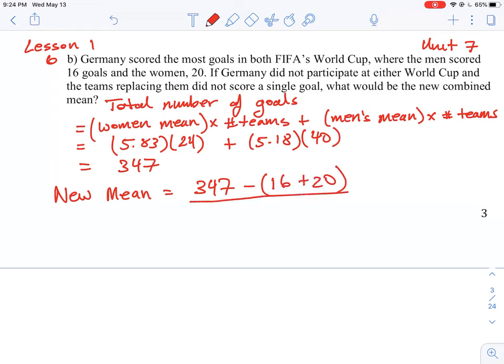So that's the total number of goals that would be left. But when we take out the German team and then they're replaced by another team, which did not score any goals, we actually don't have to decrease the number of teams. So we still have a total of 64 teams in this tournament.